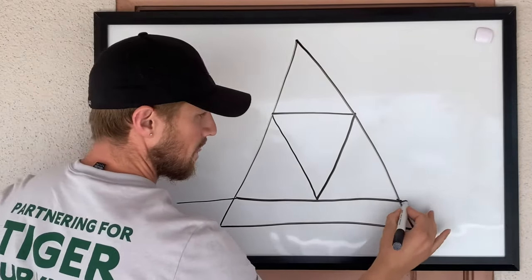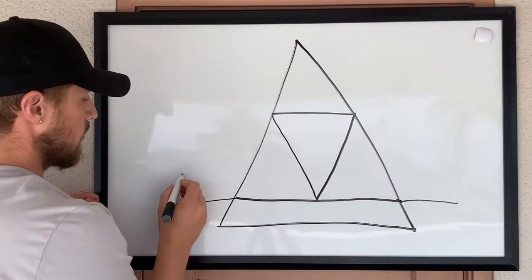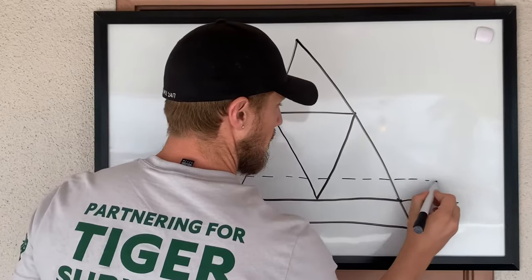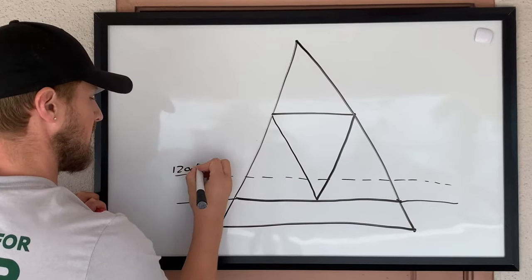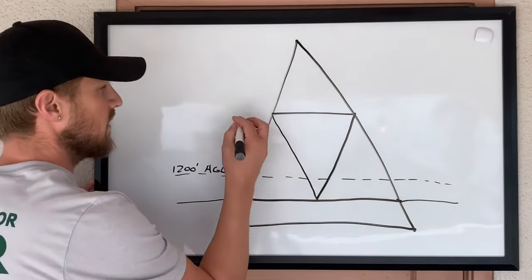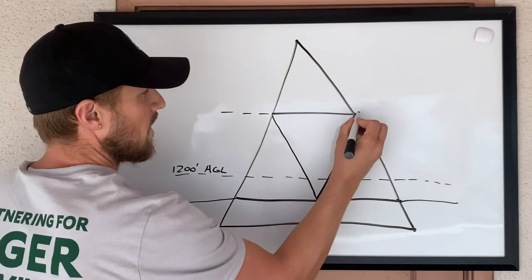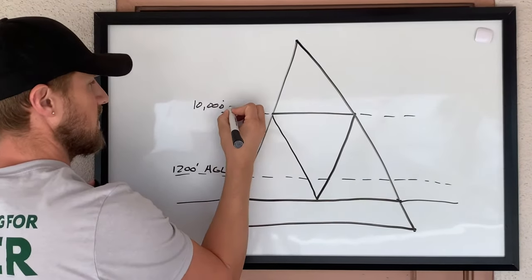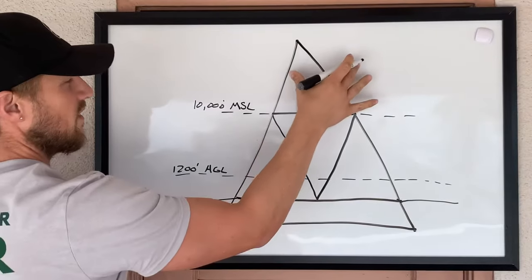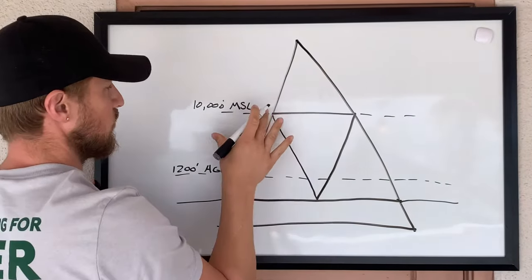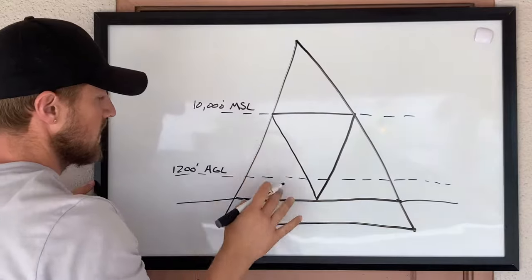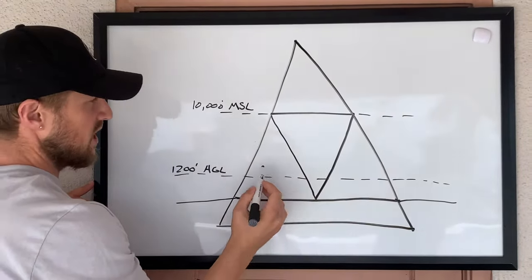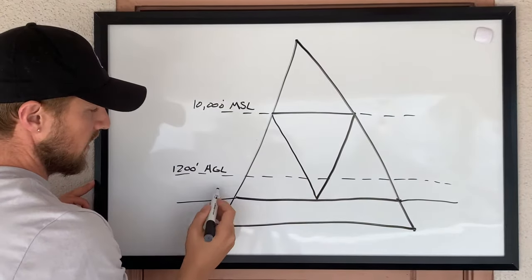We have our surface here, and then we have 1,200 feet AGL, and up here we have 10,000 feet MSL. Anything above this represents when you're above 10,000 feet MSL in that airspace. Anything between these two areas means you're above 1,200 feet AGL but below 10,000 feet MSL.